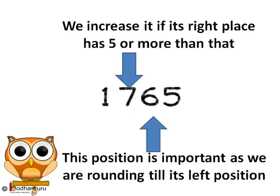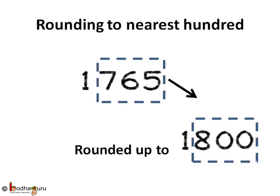Since the 10's place is 6, which is more than 4, we need to increase the 100th place by 1. Hence it would be 1800. That is, 1765 is rounded up to 1800 when we are rounding to nearest 100.